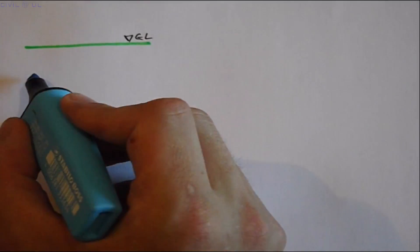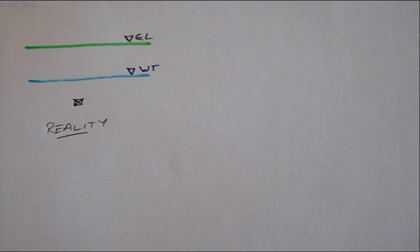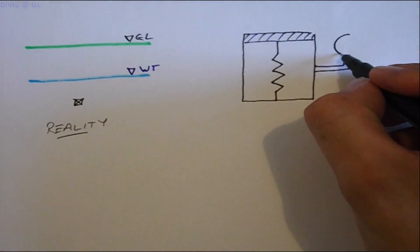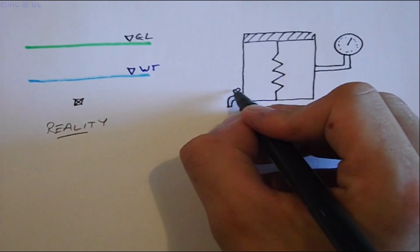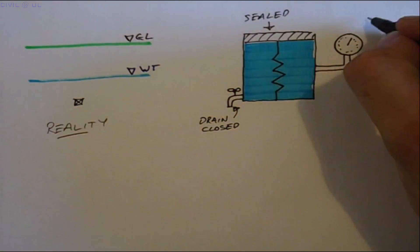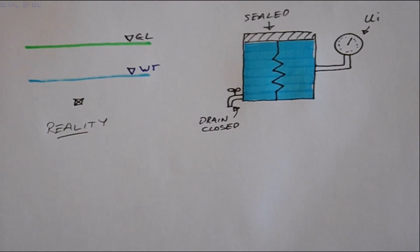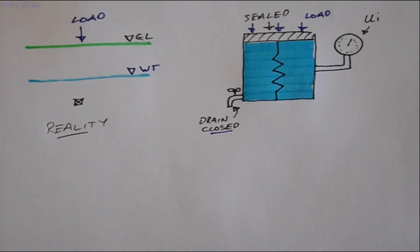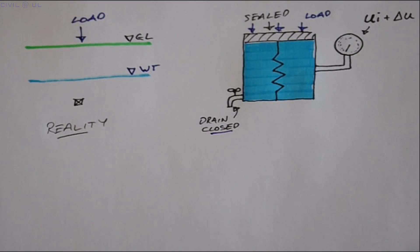The following experiment is a useful way of visualizing the consolidation process. Imagine a sealed container filled with water and soil. If the soil skeleton is modelled by a spring and the pore water is connected to a pressure gauge, the gauge will have an initial reading depending on the in-situ ground conditions. If a load F is now applied to the plunger and the drain remains closed, the reading on the pressure gauge will increase by an amount equal to the applied stress. And as water is incompressible, the length of the spring remains unchanged.